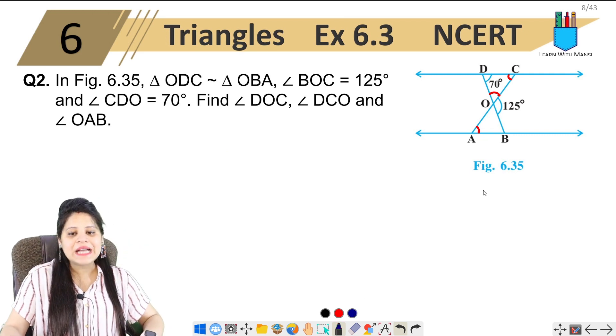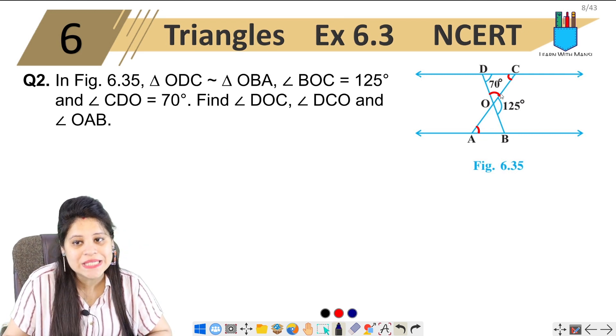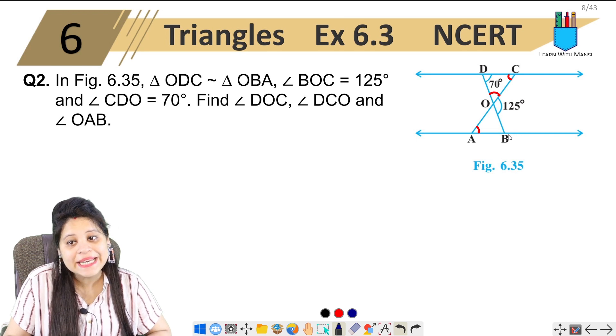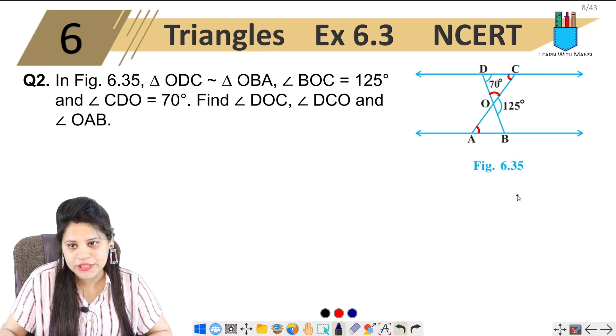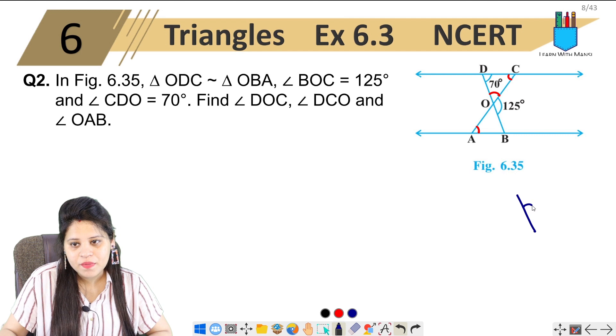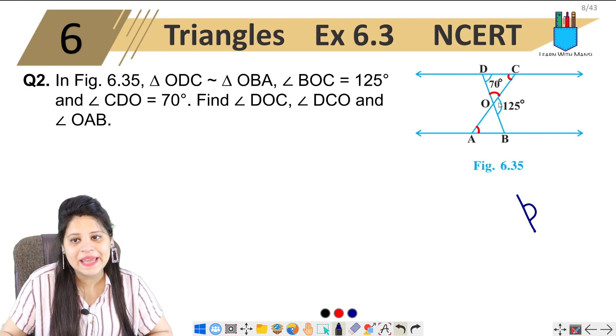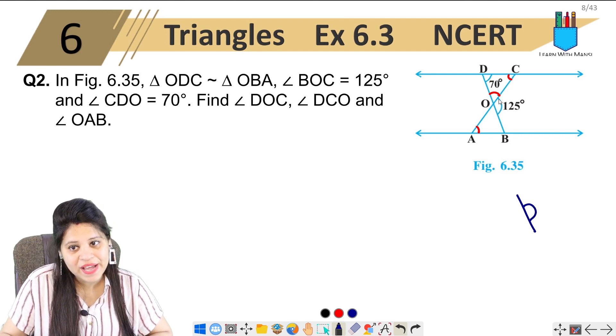Now, if I talk about triangle DOC, you can see that DOB is a straight line. This angle is 125 degrees. We will make a linear pair.